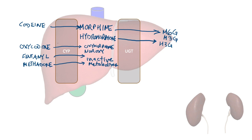Now let's talk about hydrocodone. Hydrocodone is an active opioid itself and it's converted by the CYP enzymes into hydromorphone. Because it relies on the CYP system, this conversion to hydromorphone can be variable, so generally I avoid it in liver disease. You might as well just use hydromorphone and get more predictable results, as long as you start low and go slow.